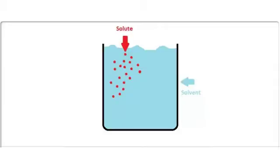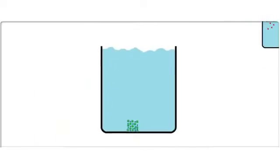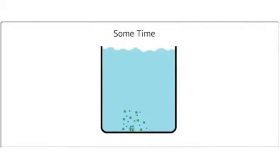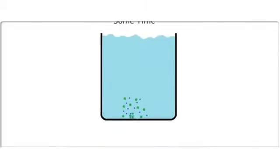The substance that is being dissolved is called the solute, and the substance that is doing the dissolving is called the solvent. When we are dealing with a liquid solution, the solvent is the liquid with the greatest volume. The solute in a liquid solution may often start as a solid, but through the process of dissolving, the solute becomes a part of the liquid solution.